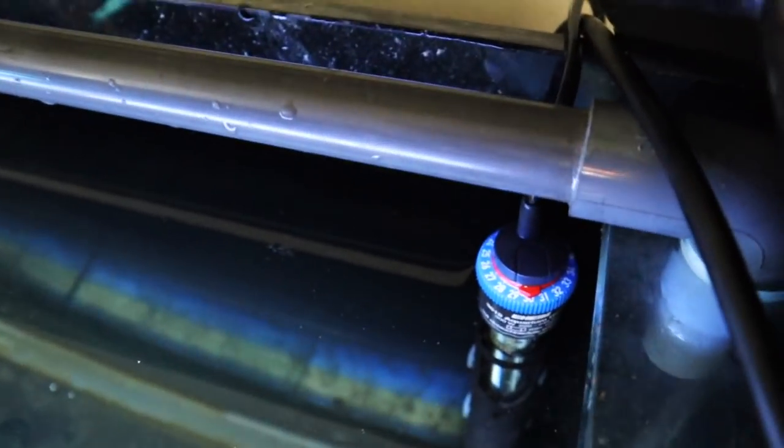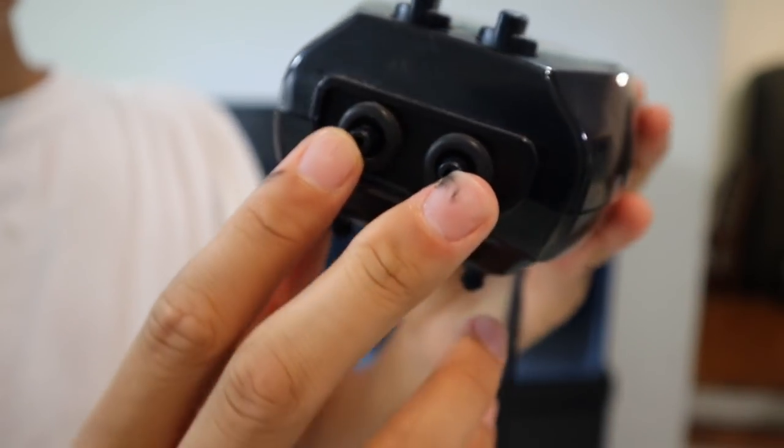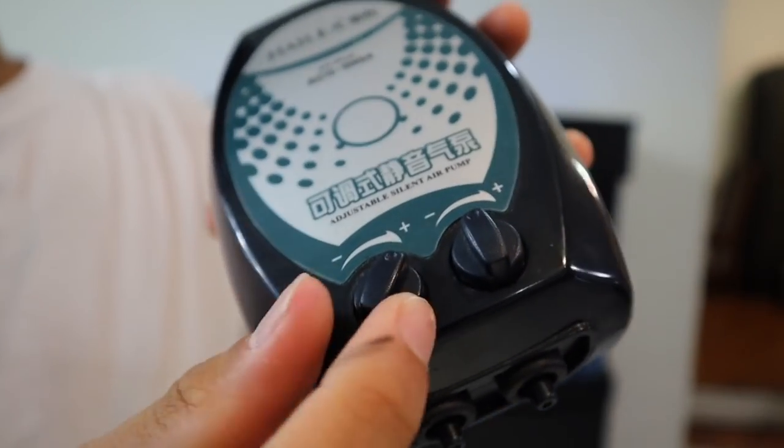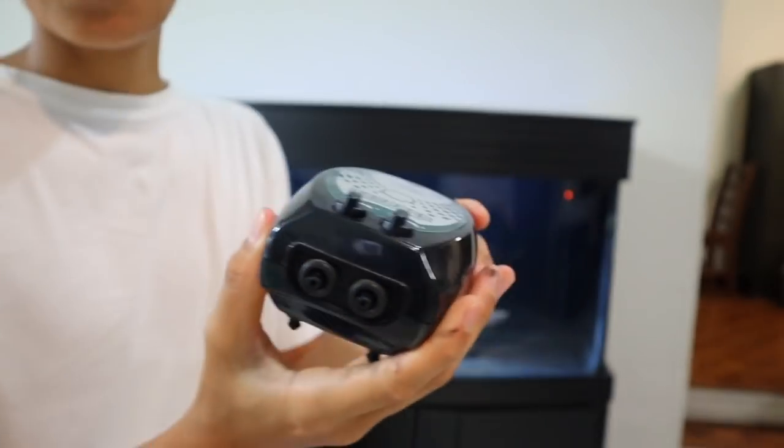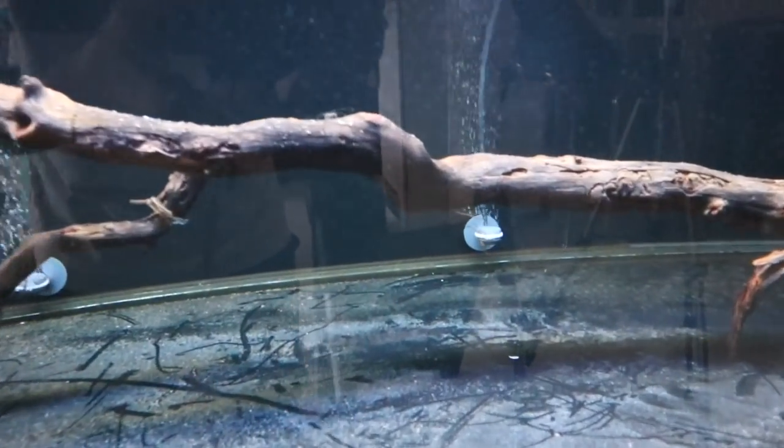This right here is a two-way splitting air pump, as you can see right here. You can also adjust the power of the bubbles that come out. So let's go and connect this thing up and give this tank some aeration.